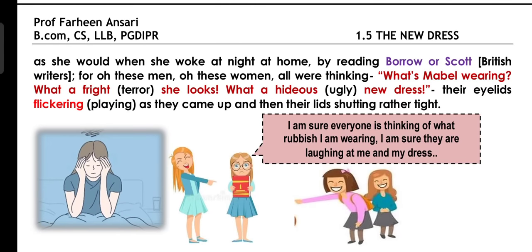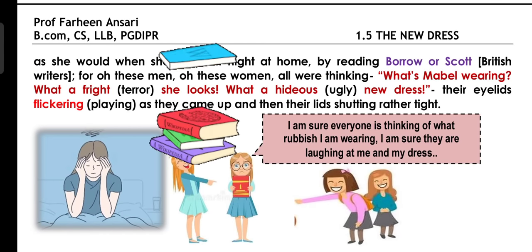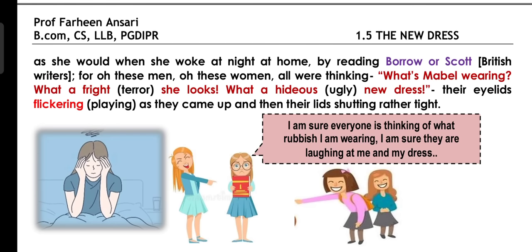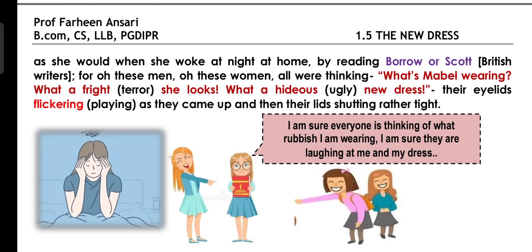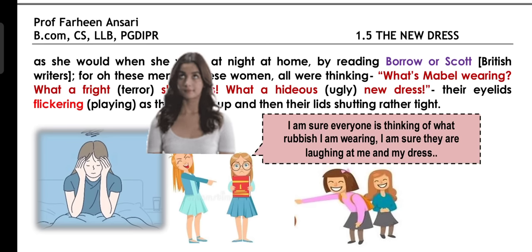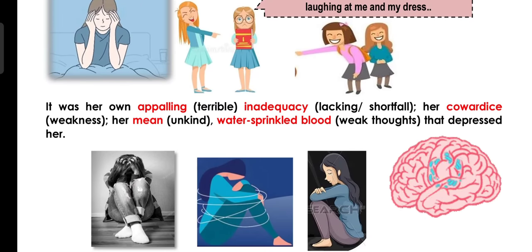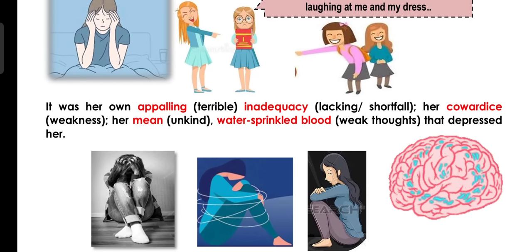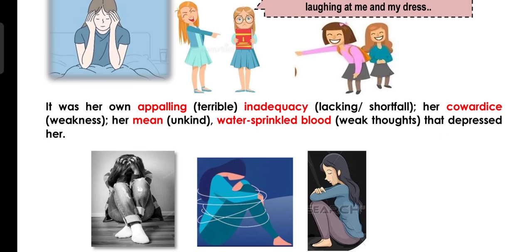Let's go to flashback to Mabel's childhood. Mabel was greatly influenced in her childhood — she read British writers like Borrow and Scott. After reading, when Mabel woke up very early in the morning, she could imagine the expression of people, how they would see her. But children, this was just Mabel's own thought. To always understand yourself as bad, to build a cowardly life, to be rude to yourself, to always have weak thoughts in your mind — that's why she is always depressed.